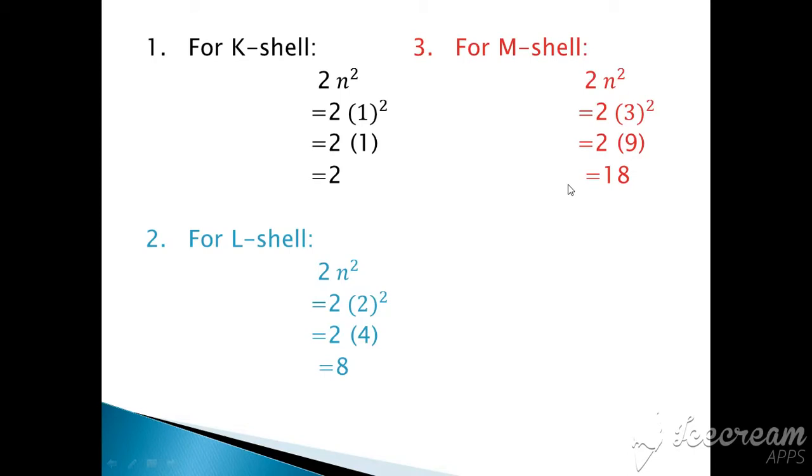But when you see some of the third shell has 8 electrons. When atom completes its octet, means 8 electrons in a shell, it can move to next level. But maximum 18 electrons can be in the M shell.